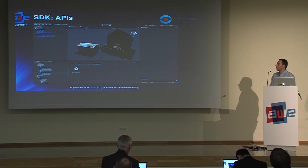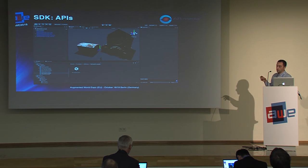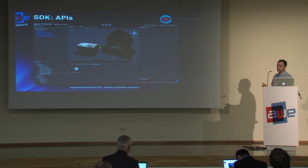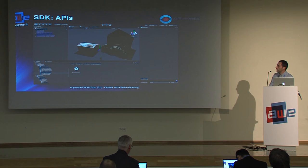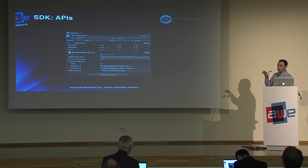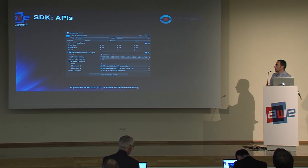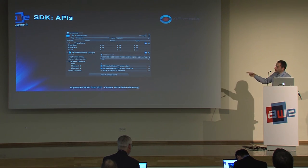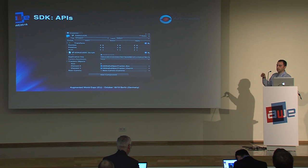In Unity you have an object called ARMedia SDK and one or more trackers with game objects controlled by those trackers. In the ARMedia SDK object you specify the application key for licensing purposes, an array list of trackers — in this case two — and the camera that renders the scene.